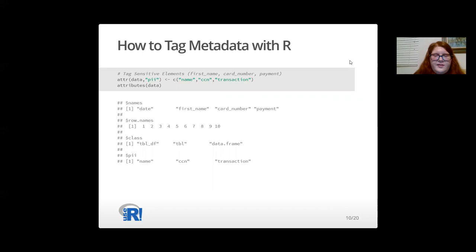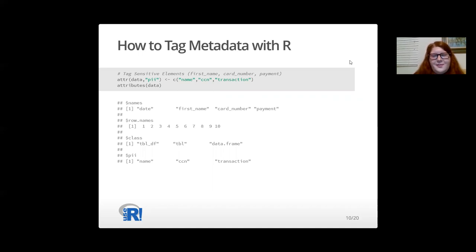First, we can tag the sensitive elements of a dataset in more general terms like name, CCN, and transaction instead of first_name, card_number, and payment, to be aggregated, analyzed, and filtered later for compliance. This tagging also helps the stewards determine which elements of the dataset to anonymize, which I will cover later in this talk.